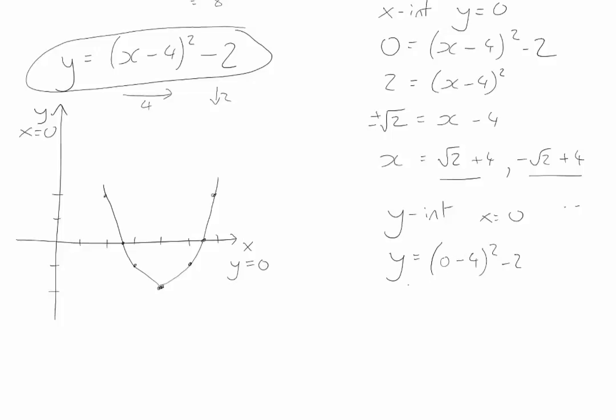And we can just say, well, therefore y must be equal to negative 4 squared minus 2. Now negative 4 squared is 16, take away 2, which gives us 14, so way up there somewhere on our y-axis, is where this crosses the axis.